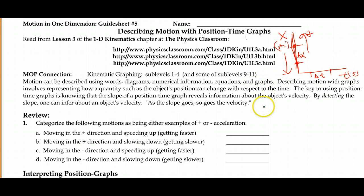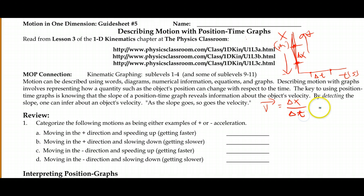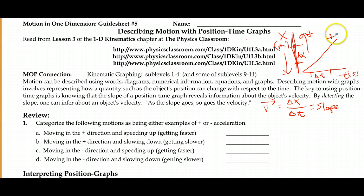In all cases, the velocity of the object is defined as the rate of change of position — delta x over delta t — and therefore it's the slope of this graph. The steeper the slope, the higher the magnitude of the velocity. Positive slopes indicate positive velocities, and downward slopes indicate negative velocities, meaning we're moving in the negative direction.